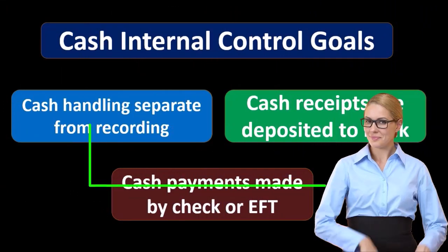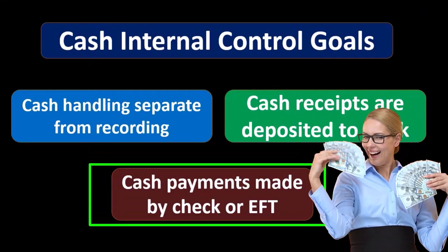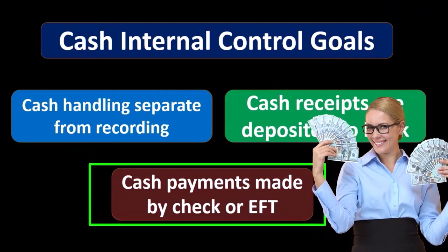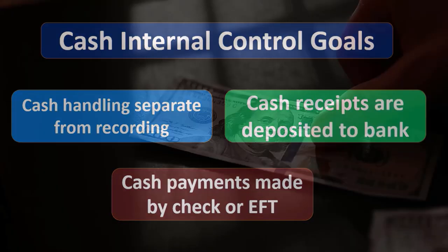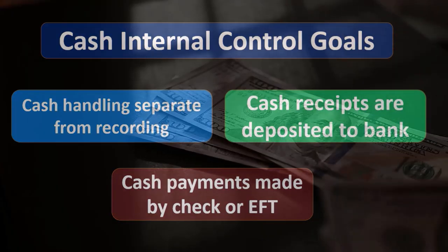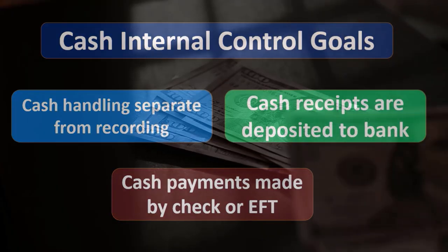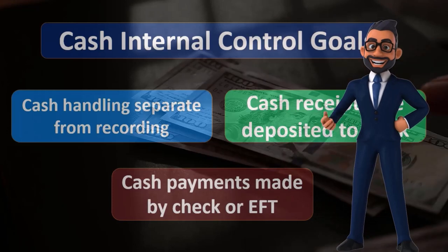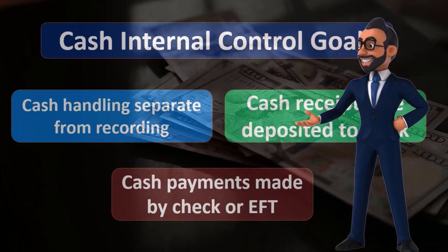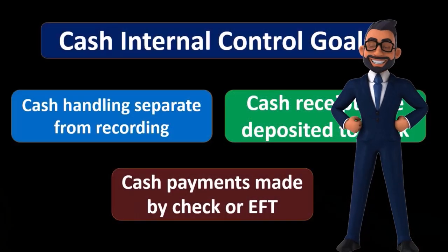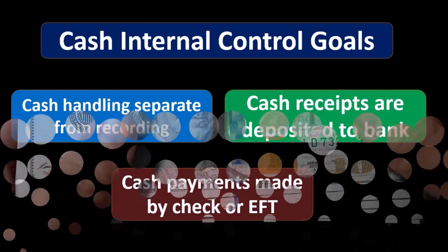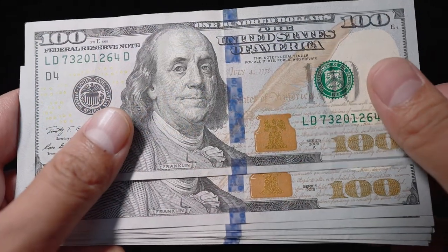Cash payments should be made by check or electronic funds transfer. The point here is that we don't really want to make our payments for business purchases with physical cash, because there's no good audit trail for it. If we use cash, we don't have a reliable audit trail.